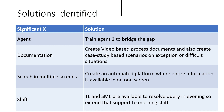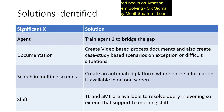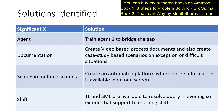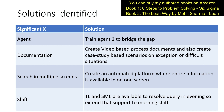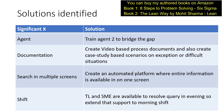Once the team identified the significant Xs, they defined solutions for each. For agent — the first significant X — they created a training plan and trained agent 2 to bridge the performance gap. For documentation, they created video-based process documents and case-study-based scenarios on exception or difficult situations to reduce errors. For search in multiple screens, they built an automated platform where all information is available on one screen. For shift, TL and SMEs — who were only available in the evening shift — had their support extended to the morning shift as well, since the morning shift was making more errors. Through these improvements, accuracy rose to 99.5% and the team achieved its goal.